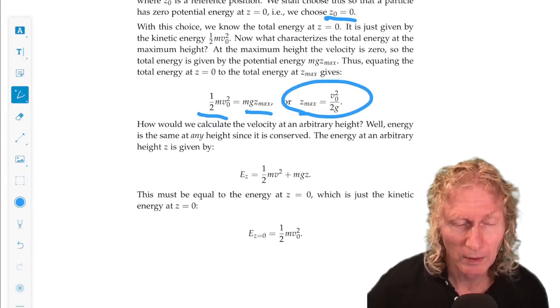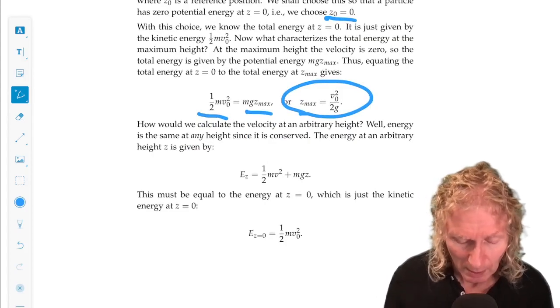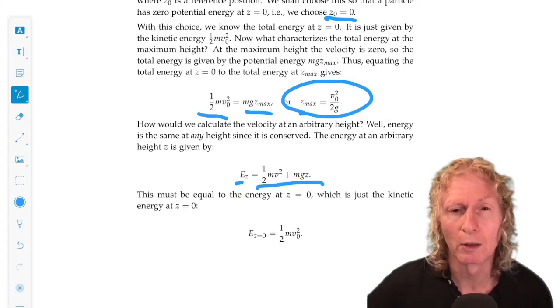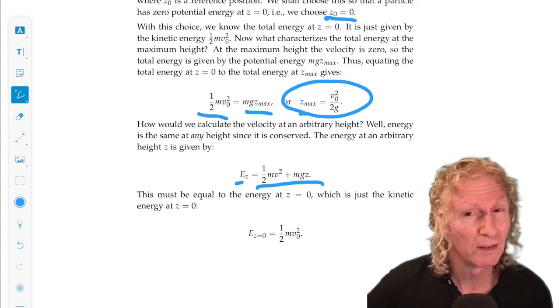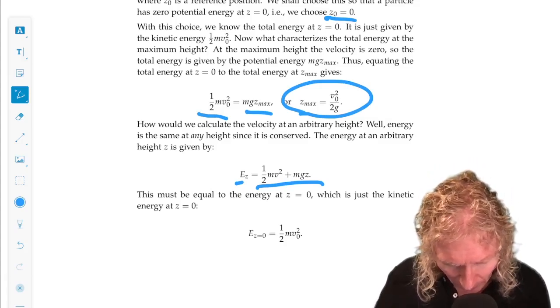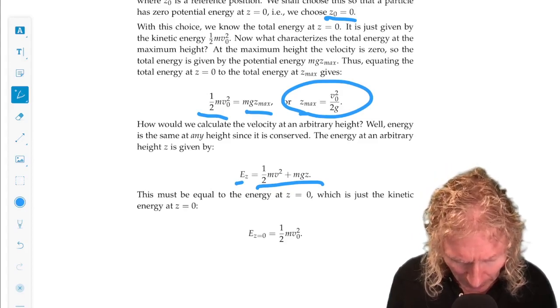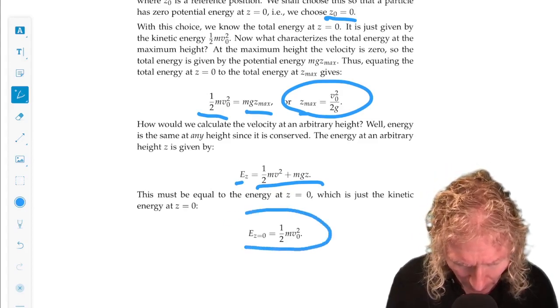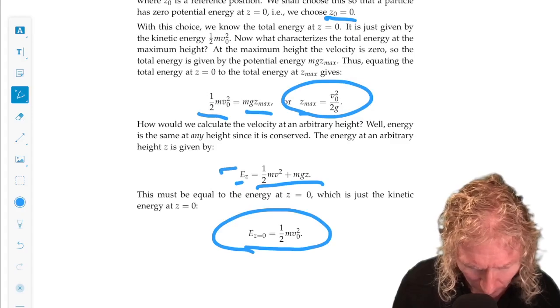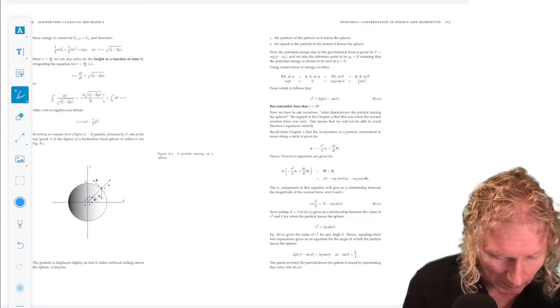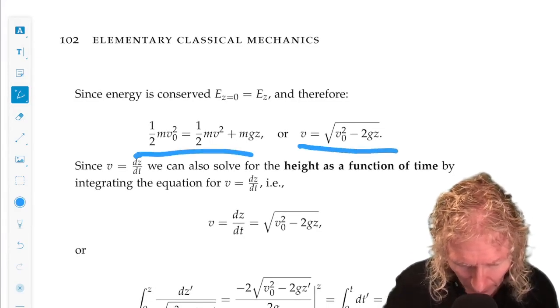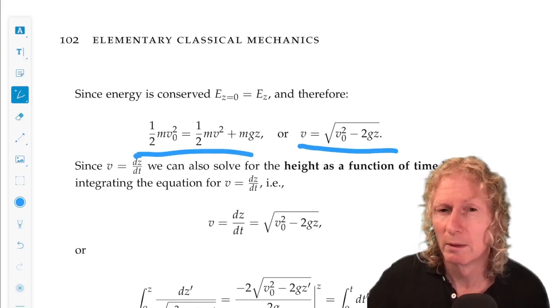To get the position, or z as a function of time, the energy at any point along the trajectory of the particle is constant. It's the same. It doesn't change. One half mv squared plus mg z. The energy at z equals zero is just one half mv naught squared. These two expressions have to be equal, because energy is conserved. We set them equal, and we can solve for v as a function of position.